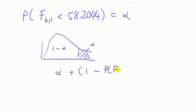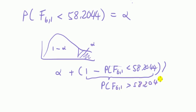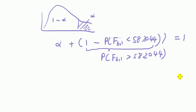Probability that f(6,1) is less than 58.2044, but 1 minus that, less than is the same as saying that is greater than. So it's probability f(6,1) bigger than 58.2044, and that comes to 1. Therefore, just taking this whole thing to the other side, that's the same as saying 1 minus probability f(6,1) bigger than 58.2044.